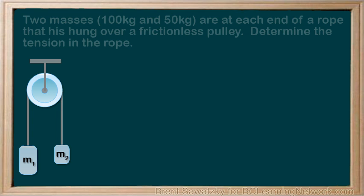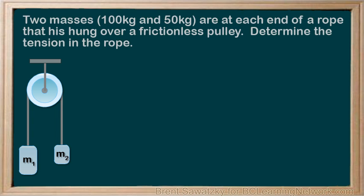For example, two masses, 100 kilograms and 50 kilograms, are at each end of a rope that is hung over a frictionless pulley. Determine the tension in the rope.